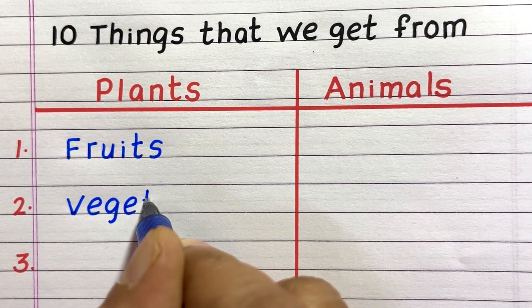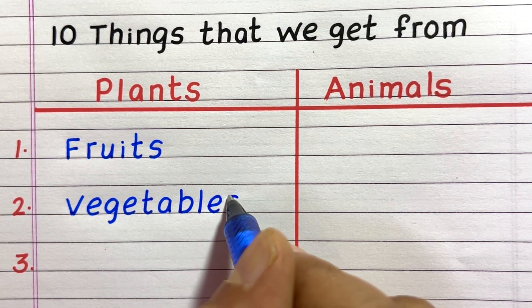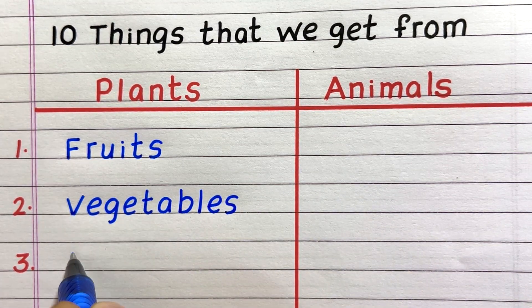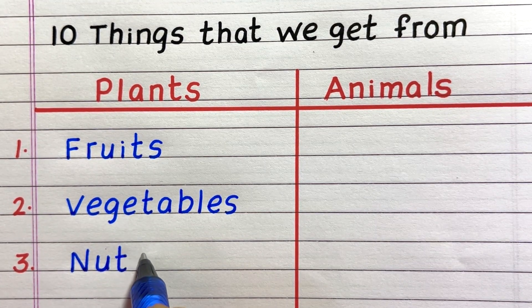First thing that we get from plants is fruits. Second, vegetables. Third, nuts.